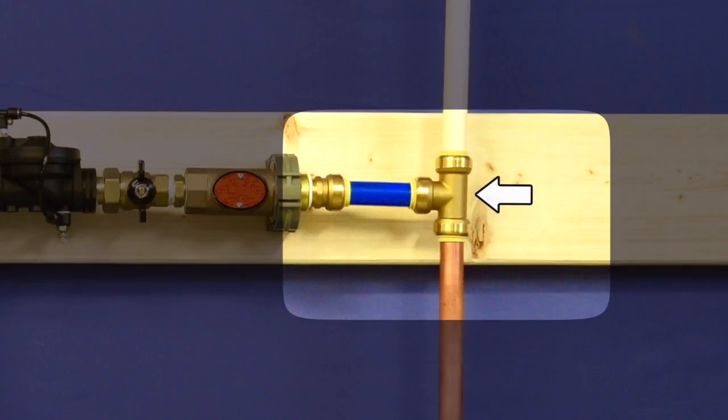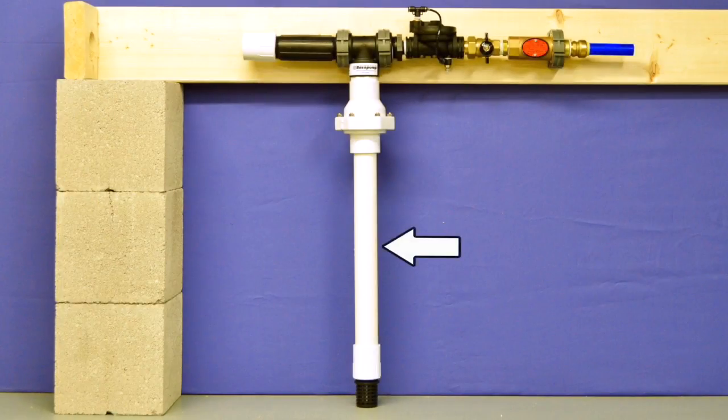The kit includes a push-in T fitting which connects into the cold water line. The suction requires a 1¼ inch PVC pipe to be connected to the base pump and glued into place.